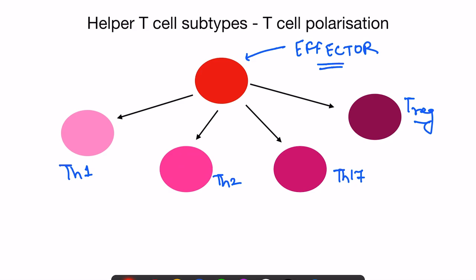Once activated, it's not that all T helper subsets will be formed simultaneously. It depends on which antigen is interacting with the helper T cells. Because of this, the dendritic cell or antigen presenting cell releases certain interleukins — chemicals that act on T cells, ultimately changing gene expression and the proteins secreted. Depending on what antigen presenting cells secrete, T cells differentiate into subsets: Th1, Th2, Th17, or T regulatory cells.